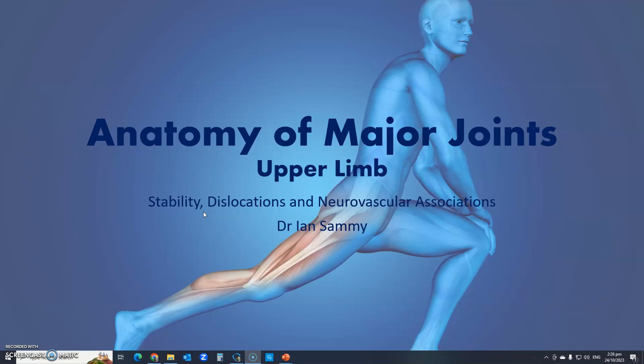In these two lectures, we're going to look at dislocations of major joints, discussing the anatomy of the joints, the factors that contribute to stability, the injuries that are particularly associated with instability of the joint, and any neurovascular complications that might arise from joint dislocations.